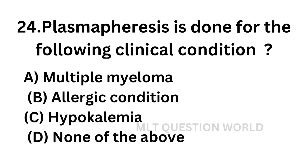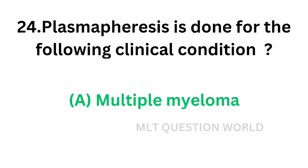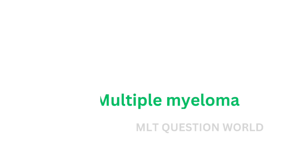Question 24. Plasma pheresis is done for the following condition. Option A: Multiple myeloma. Option B: Allergic condition. Option C: Hypokalemia. Option D: None of the above. The correct answer is Option A — Multiple myeloma. Plasma pheresis is done in the condition of multiple myeloma to remove abnormal proteins from plasma.